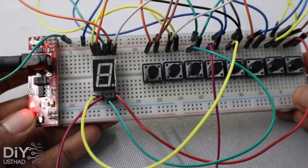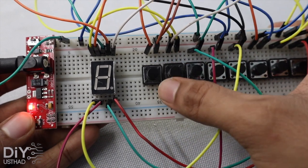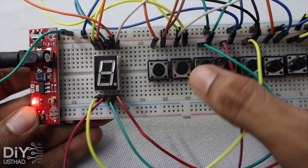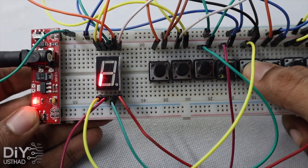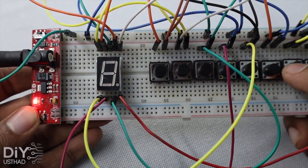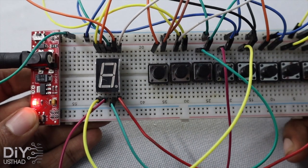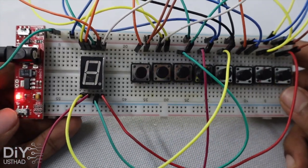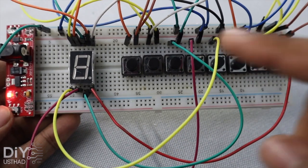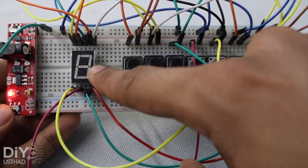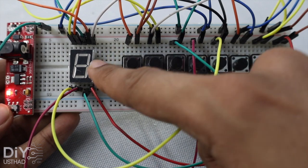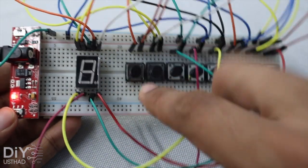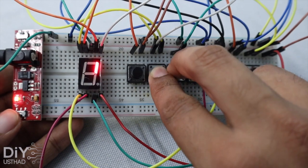If I press the first switch, this is A, B, C, D, E, F, and finally G, and this one is the DP, the dot. So what actually happens is if we're controlling this from a microcontroller and we need to make the digit 1, then B and C will be on.